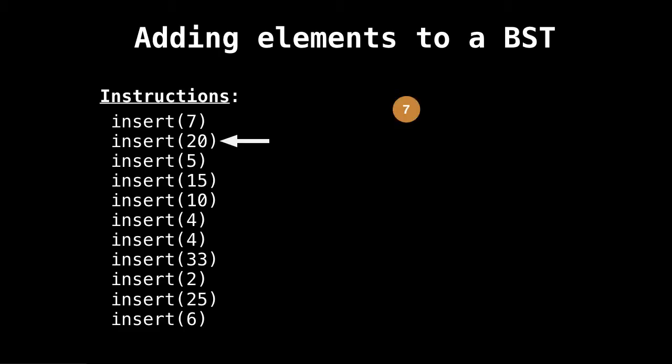Next we want to insert 20. So 20 is greater than seven, so we insert it to the right. Next we want to insert five. So we always start at the root when we're inserting, and that's an important point. So you start at the root, and then you move your way down the tree to figure out where you want to insert the node. So we start at the root, and then five is less than seven, so we're going to insert it to the left.